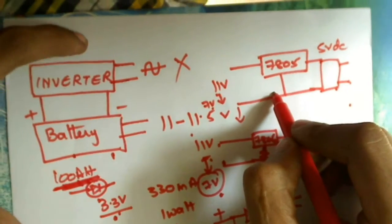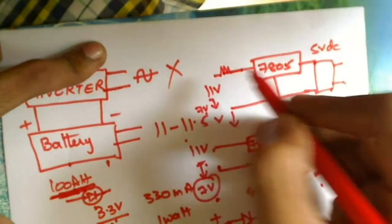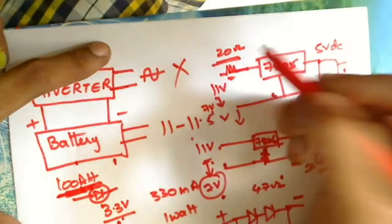In this case it's always better to connect a small amount of resistance in series so that we can control the current going to the mobile. So this resistor will be about 20 ohms.